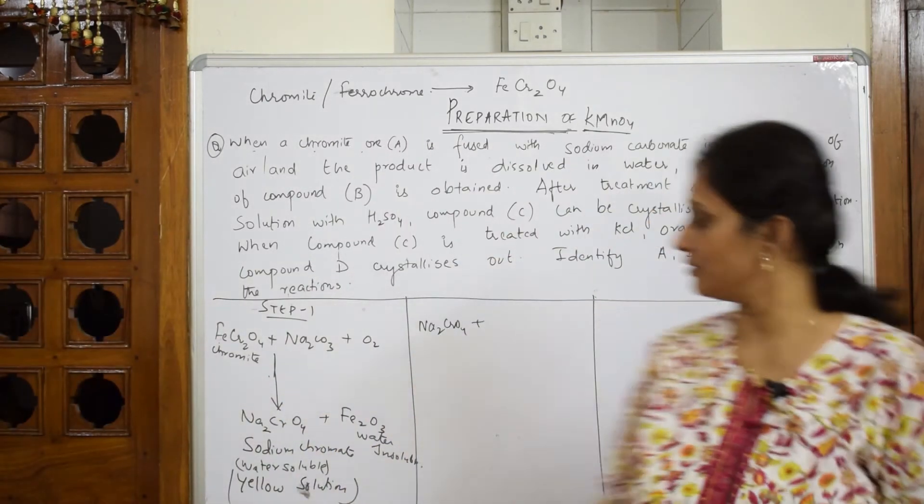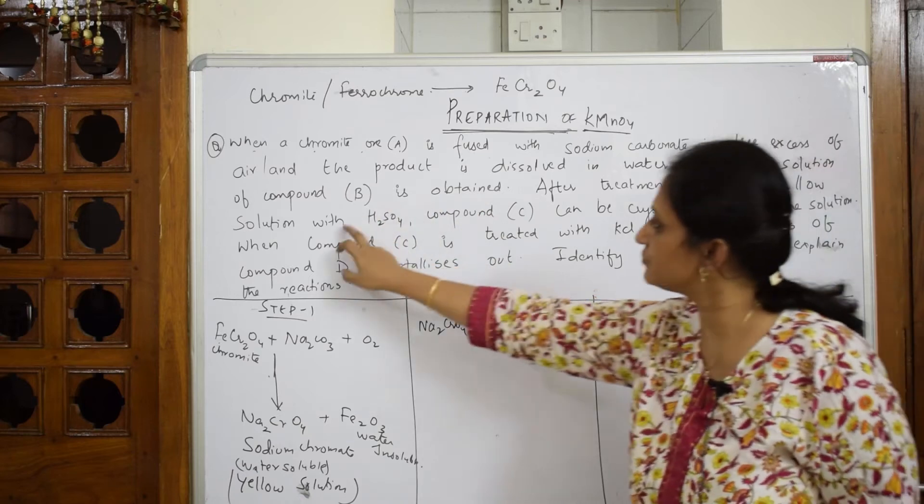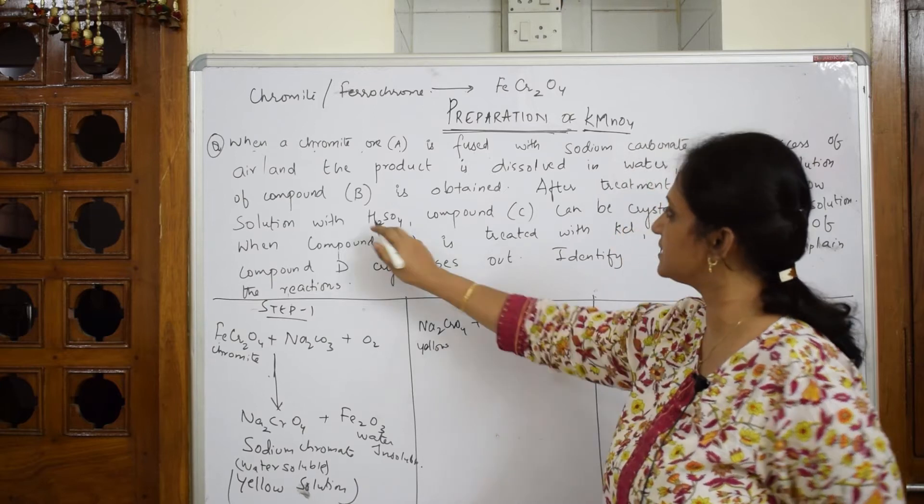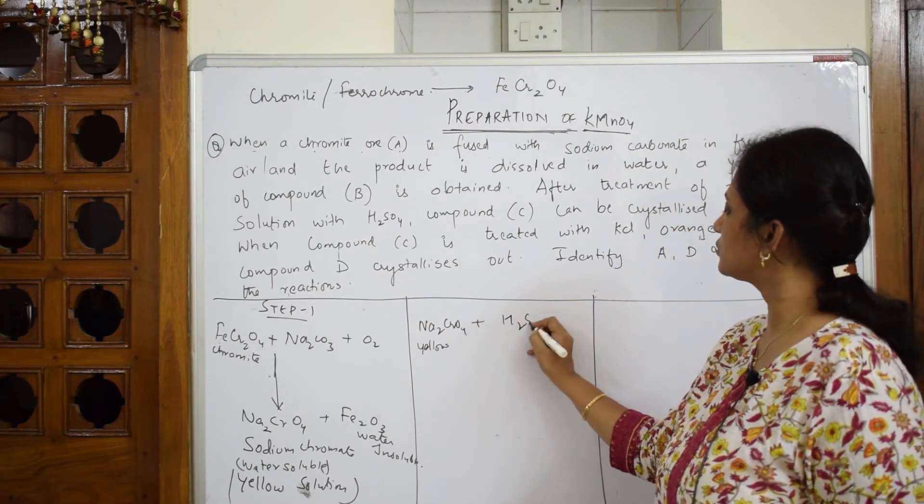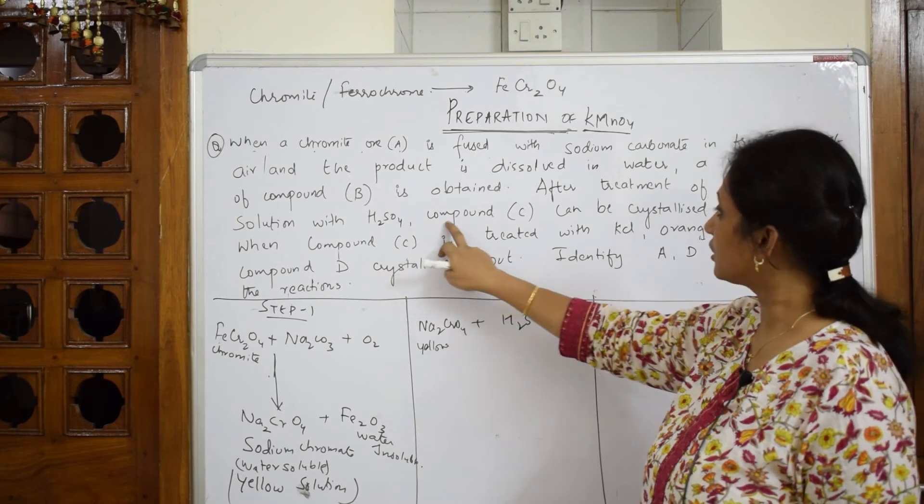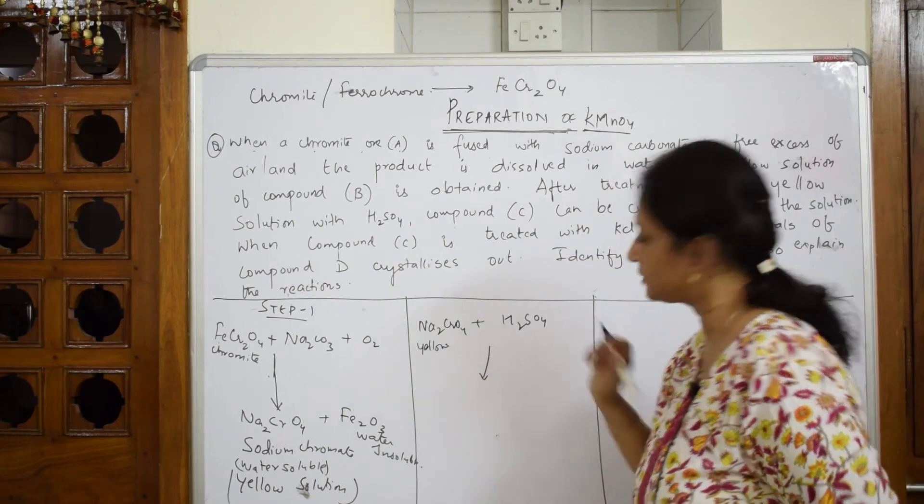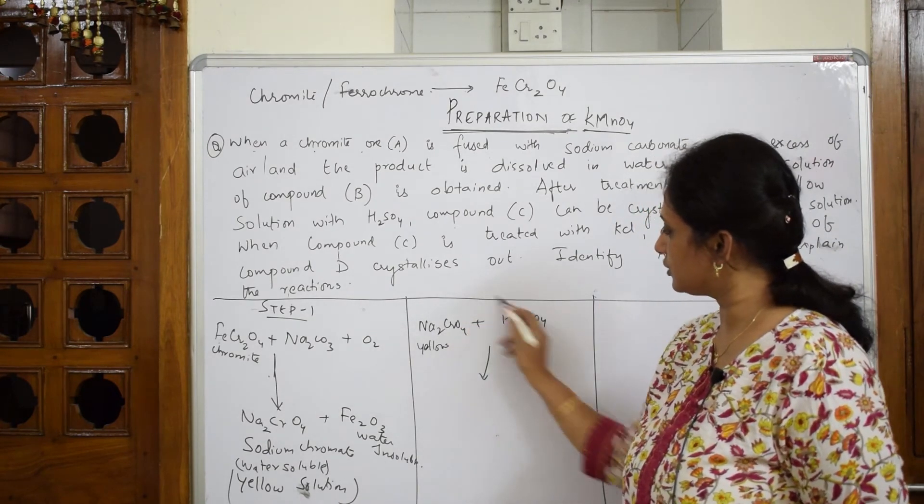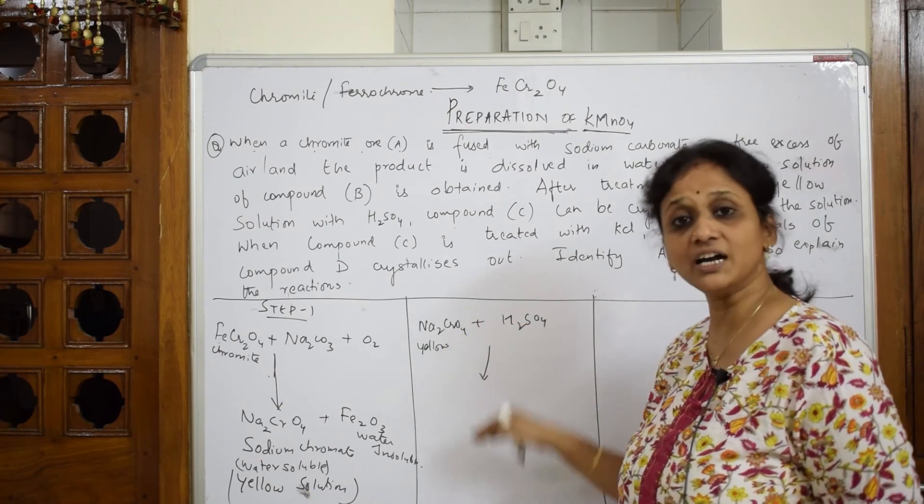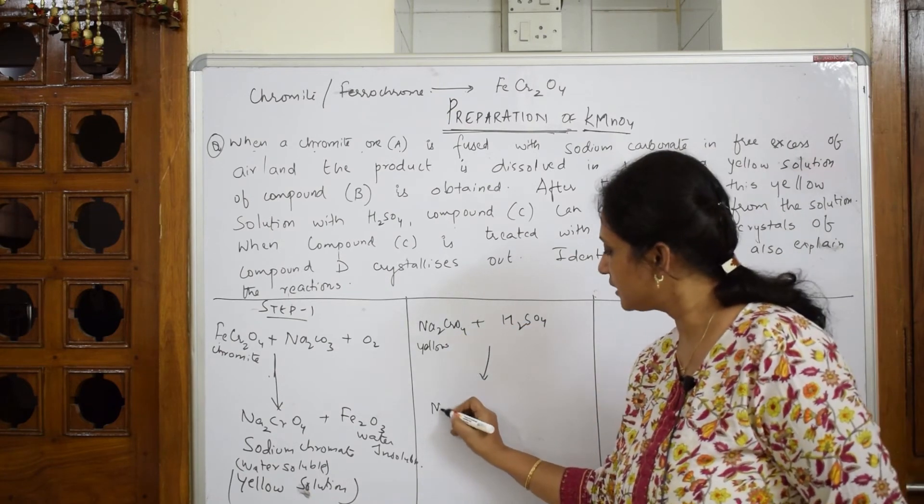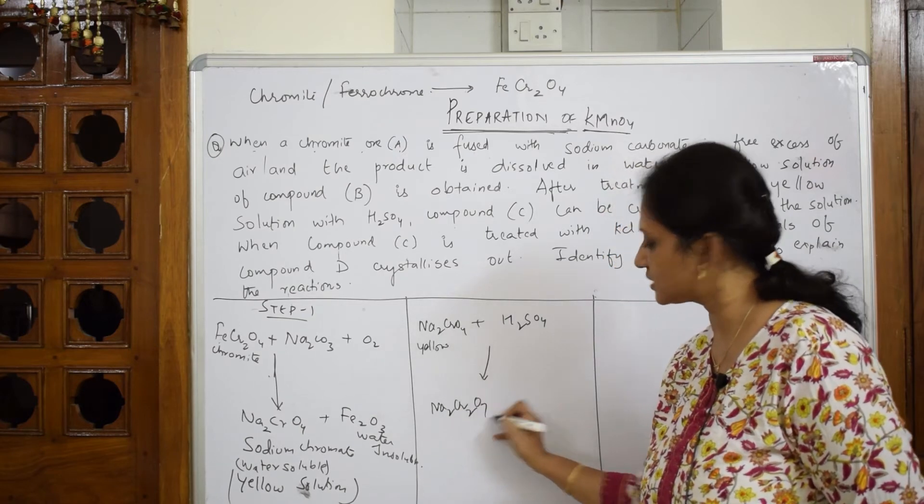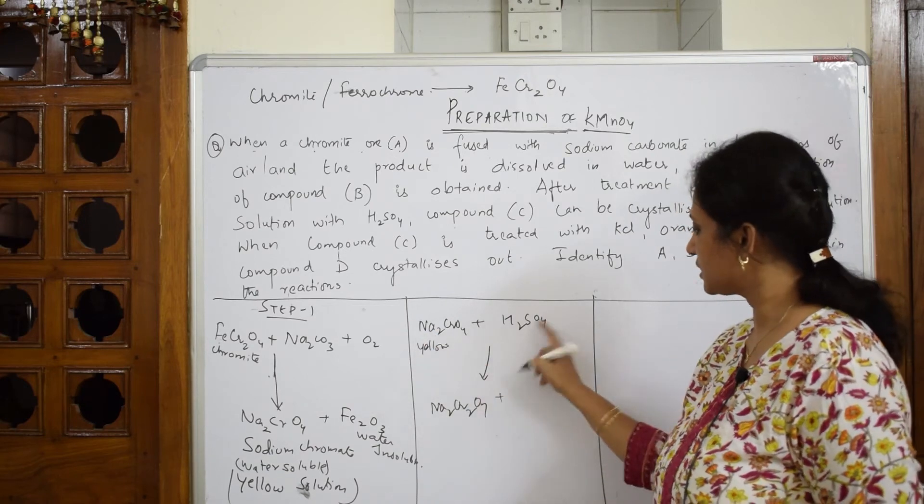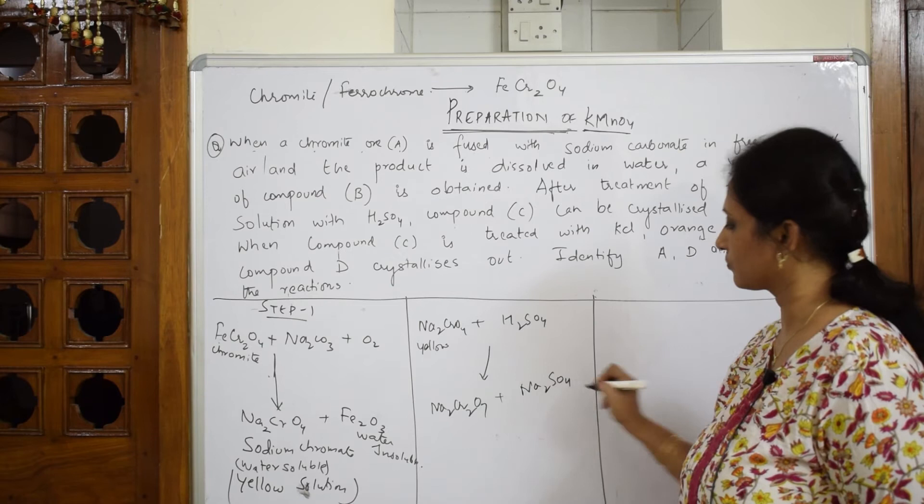This yellow solution, water soluble one, after treatment of this yellow colored solution with sulfuric acid. Now, I have to take this yellow colored solution and I have to treat it or acidify with sulfuric acid, H2SO4. Now, compound C. Let me first write the products. When you're taking this, you're acidifying it. When you're acidifying it, this is going to the higher oxidation state. What is a higher oxidation state? Na2Cr2O7. Plus the leftover sodium is forming Na2SO4.